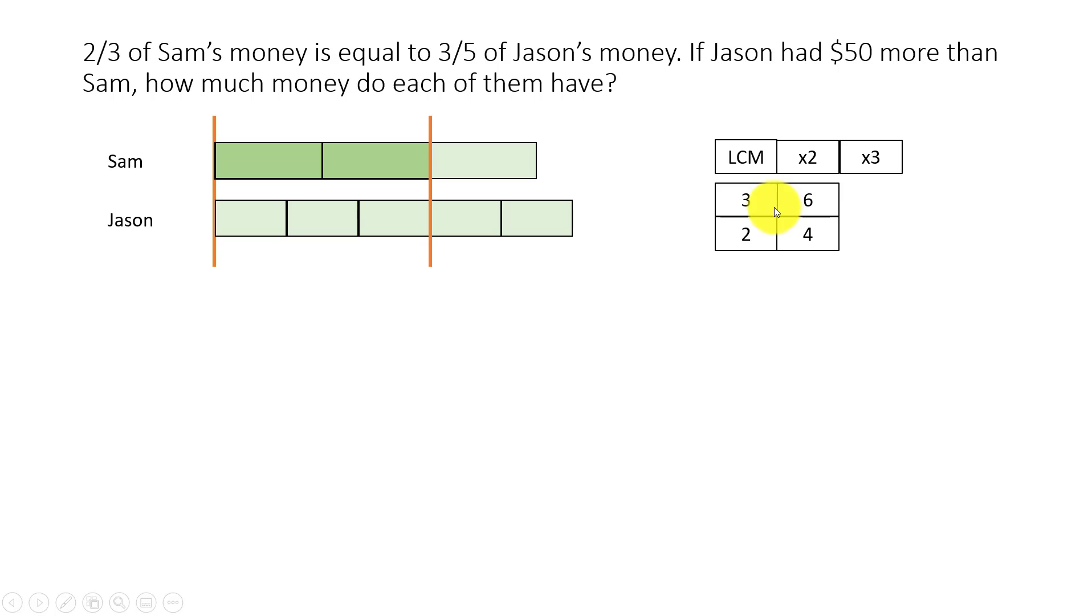We don't have any match yet. Let's do times three. Three times three gives us nine and two times three gives us six. So there we see a match here: six. Six is a multiple of three and six is also a multiple of two, so six is a common multiple. This six is the lowest common multiple of three and two.